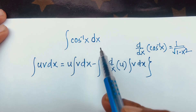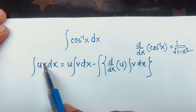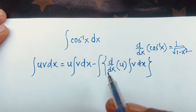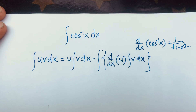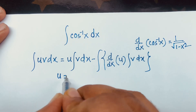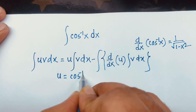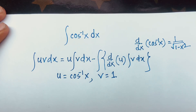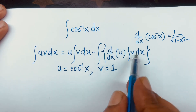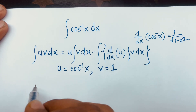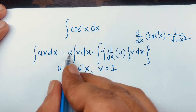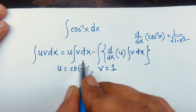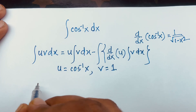So if you follow these rules, you can easily solve the integral of cosine inverse x dx. In this case, cosine inverse x will be u, and what is the value of v? Here v is 1. So u is equal to cosine inverse x and v is equal to 1.